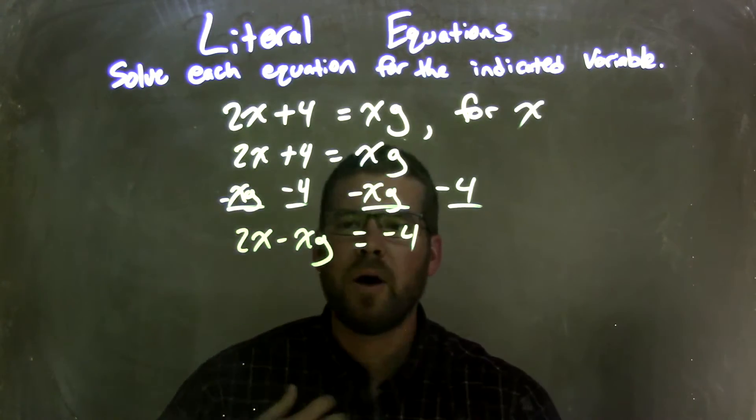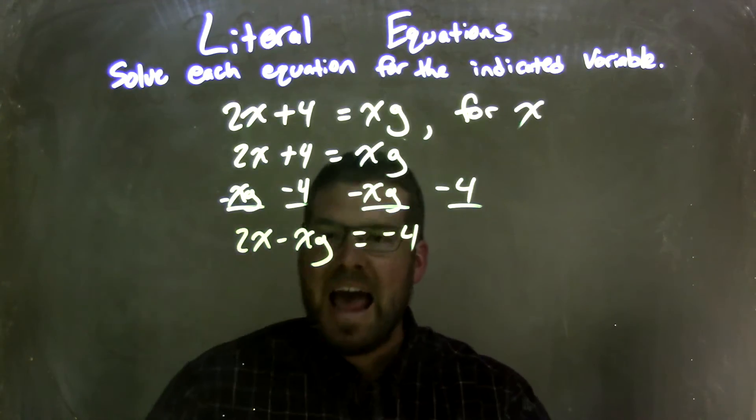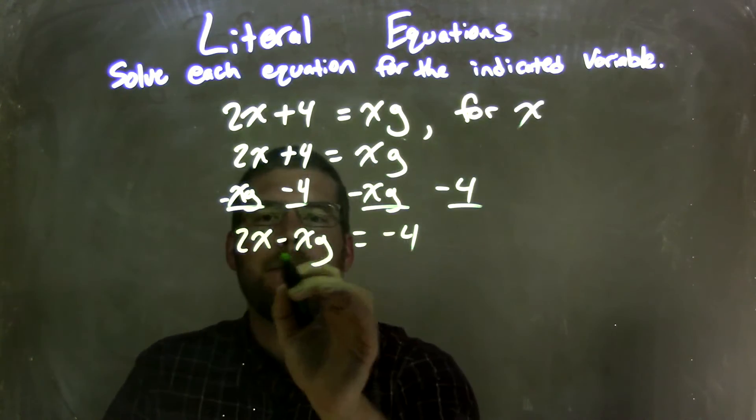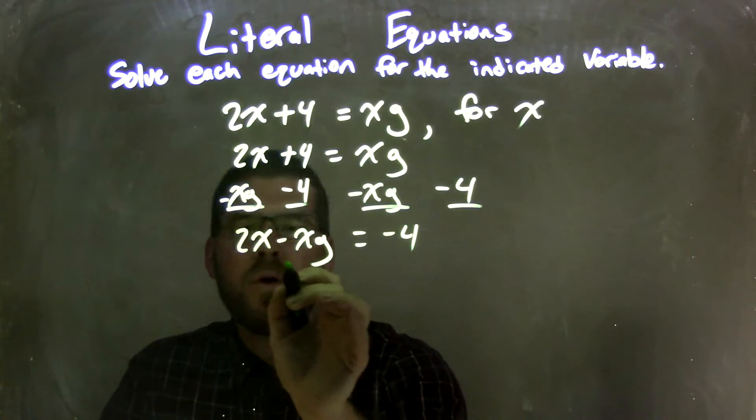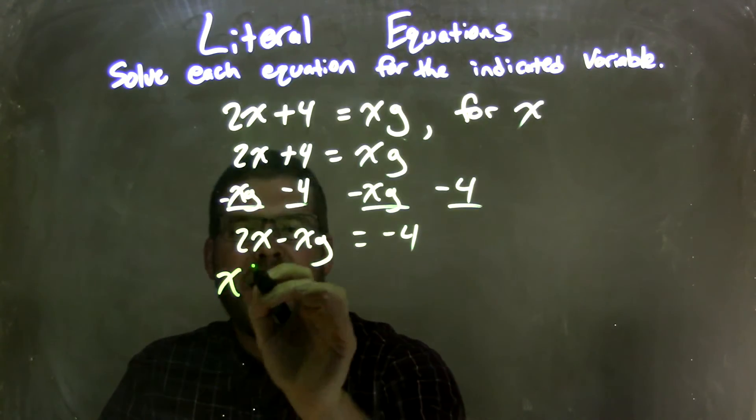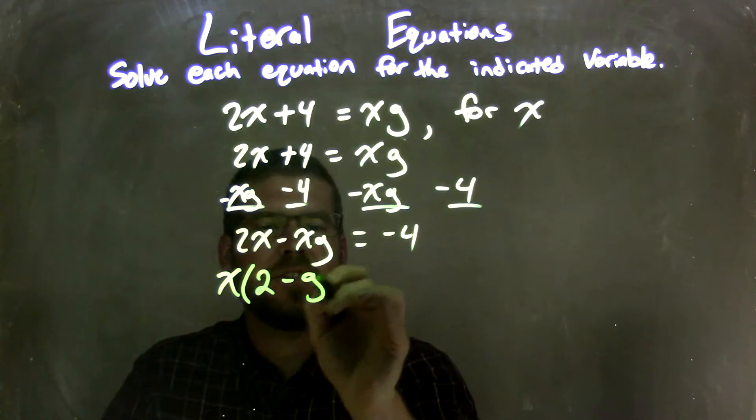So what can we do here? Well, if we pull out an x, what we're essentially getting is an x on the outside and we're left with 2 minus g on the inside.